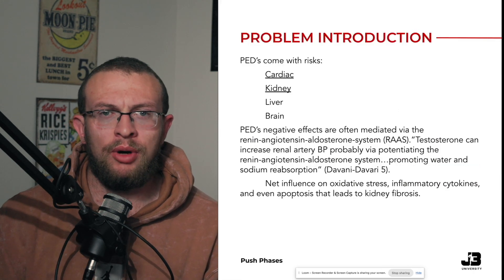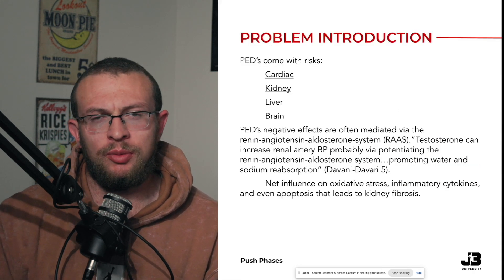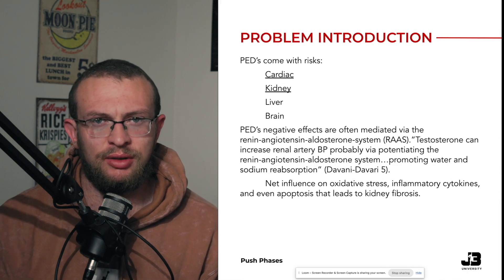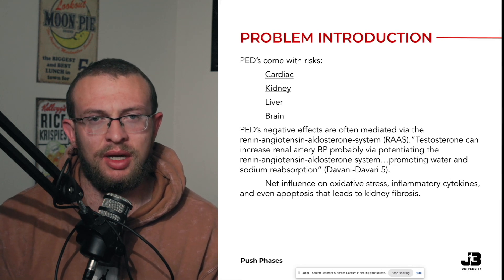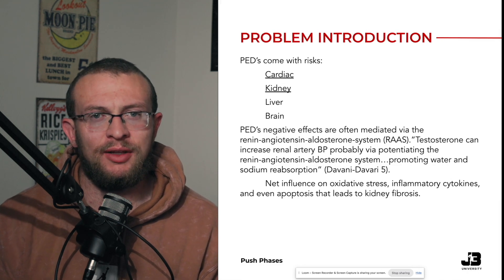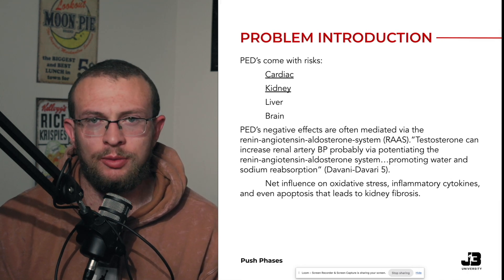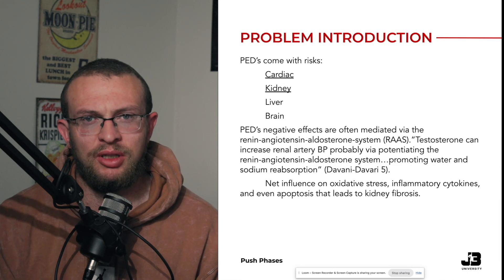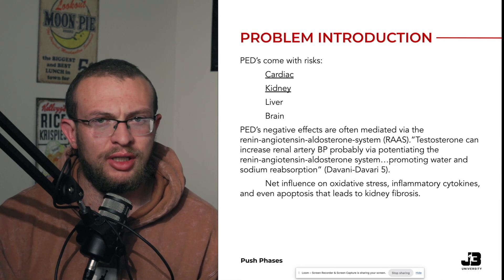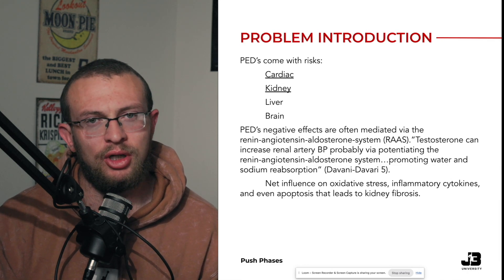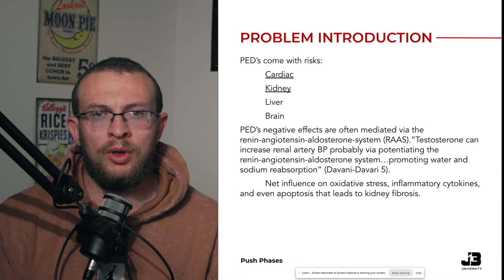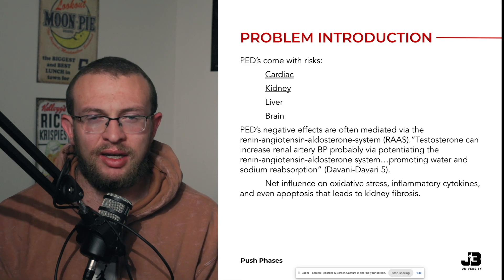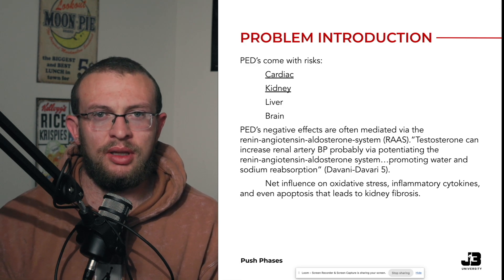The primary problem with PEDs is going to be their influence on the renin-angiotensin-aldosterone system. PEDs elevate risks in multiple areas; we're typically considering the primary ones being cardiovascular, kidney, liver, and brain. But today we're primarily going to be talking about PEDs' negative effect outcomes that come from influencing the renin-angiotensin-aldosterone system.